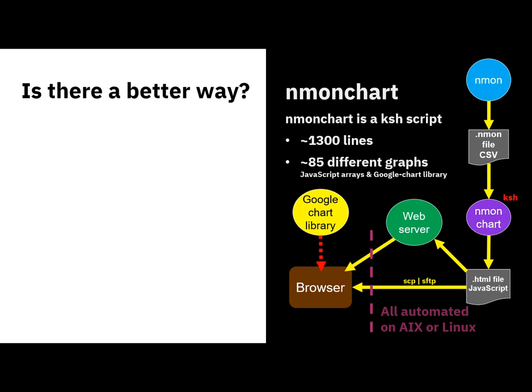So again, we take the NMON files — the .NMON files — and that goes through a program called NMONChart, which is a Kornshell script. That generates an HTML file, which is basically a website. Inside that, it has some JavaScript and JavaScript arrays for the data. Somehow you get that to a browser on your laptop — there are various ways of doing that. And then when you invoke it in your browser, it pulls in the Google Chart library, and the browser actually generates the graphs. You can see it's 1,300 lines long, because there are so many graphs in there — there's only about 10 lines for every graph.